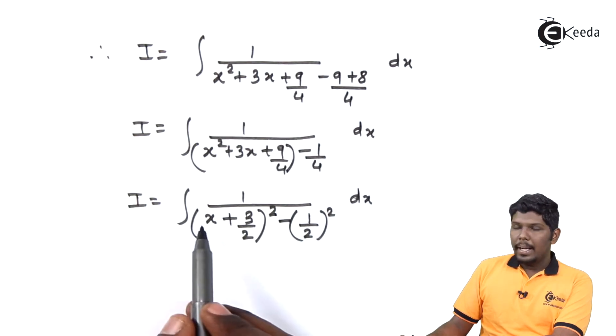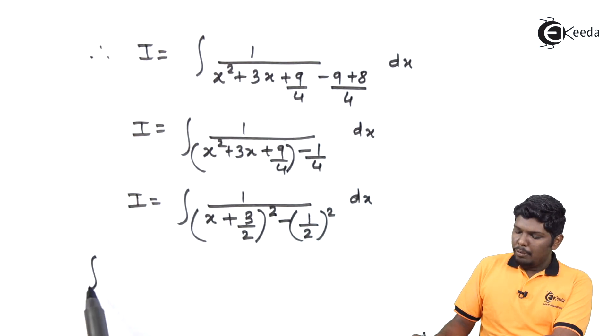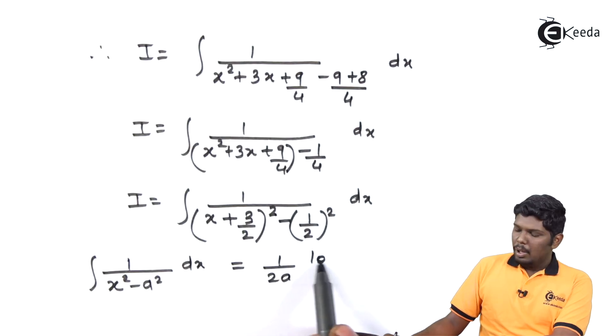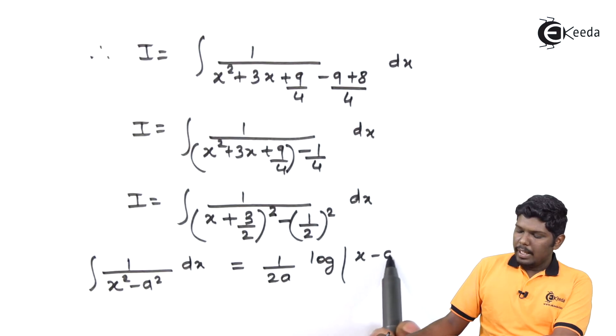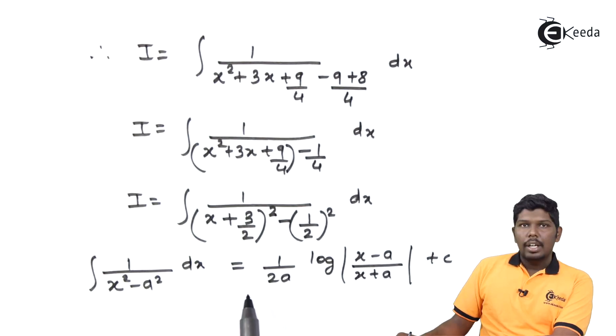Now I can compare this integral with the standard formula 1 upon x² minus a² dx, which is written as 1 upon 2a log of x minus a upon x plus a plus c. This formula we have already proved in the previous video.